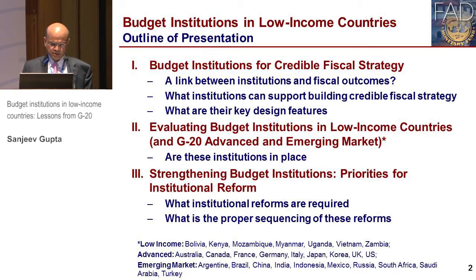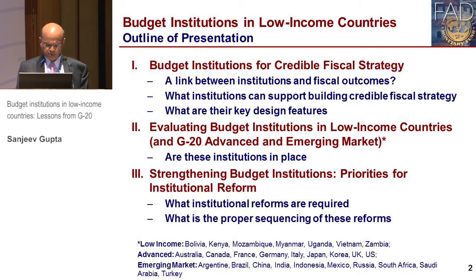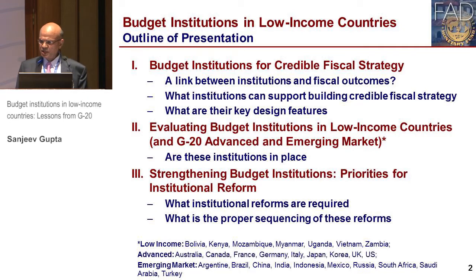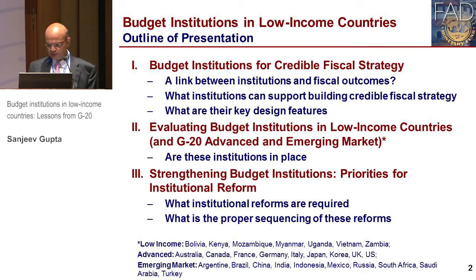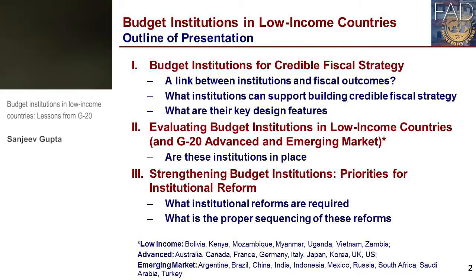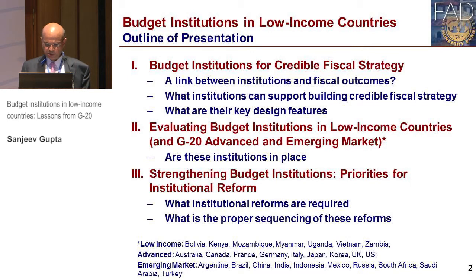In the second part of my presentation, I'm going to quickly present to you the results of the evaluations for G20 advanced emerging markets and for seven low-income countries which are Bolivia, Kenya, Mozambique, Myanmar, Uganda, Vietnam, and Zambia.